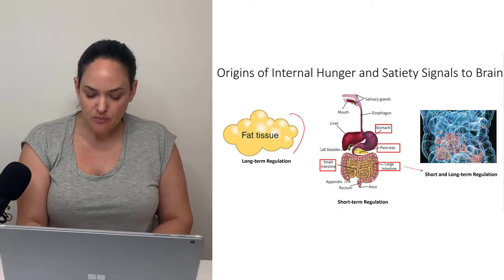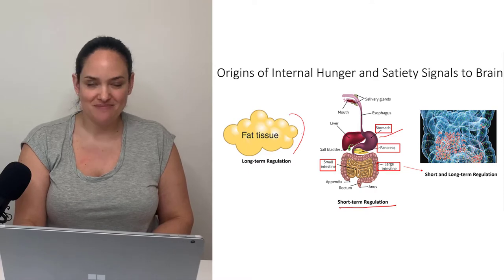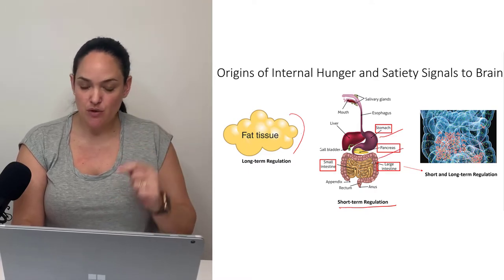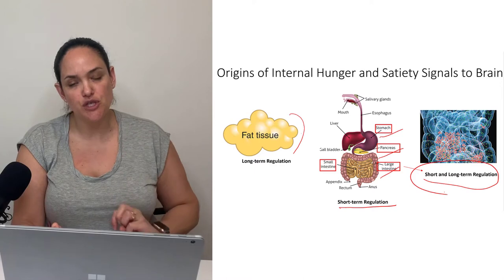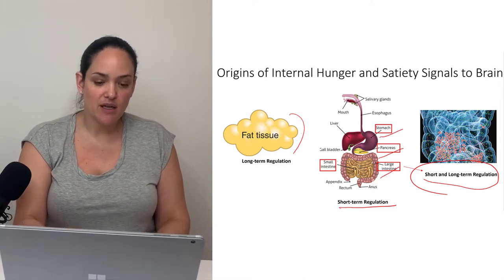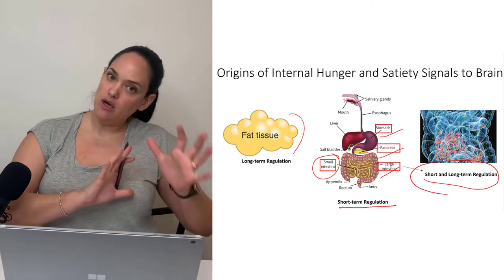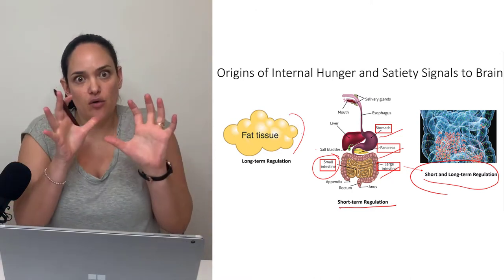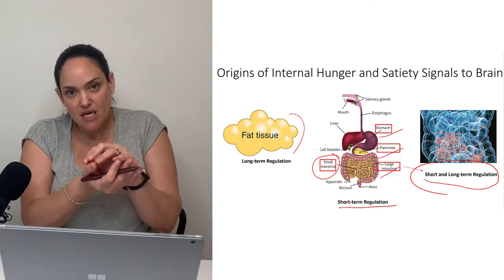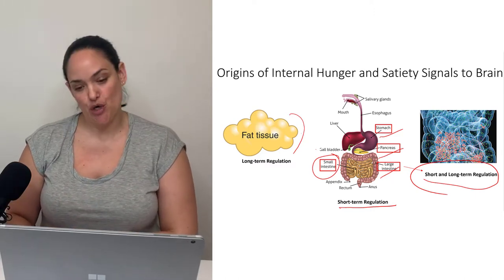The digestive tract also sends messages to the hypothalamus. The stomach releases leptin and ghrelin; the pancreas releases insulin, which also has receptors on the hypothalamus. The large intestine, mostly through its microbiome association, and the small intestine through things like CCK and GLP-1, also send messages to the hypothalamus. So there's long-term regulation and short-term regulation of how signals coming into the arcuate nucleus of the hypothalamus affect our drive to eat or not.